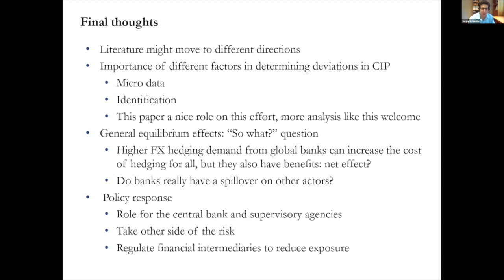Finally, thinking about policy — and we are at the Central Bank of Chile — if there are spillovers and negative externalities, the central bank could potentially play a counteractive role to shrink CIP deviations when there is a market dislocation. Supervisory agencies might also impose stricter rules so banks don't remain unhedged and put pressure on CIP. There is a role for policy action to the extent that these effects call for it. Thank you very much.